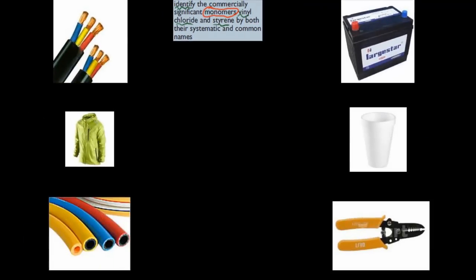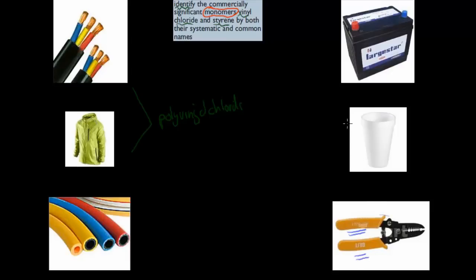So for example, here we have a couple of different products. We have electrical insulation, raincoats, and rubber hoses. These get produced using the polymer polyvinyl chloride. Whereas here we have car batteries, styrofoam cups, and the plastic coatings on tools, and these get produced using polystyrene. So these are our polymers. This dot point is asking us what are the common names and the systematic names for vinyl chloride — the monomer — and styrene.